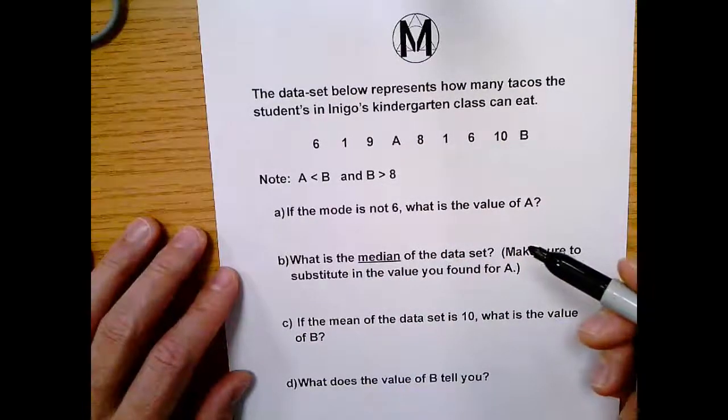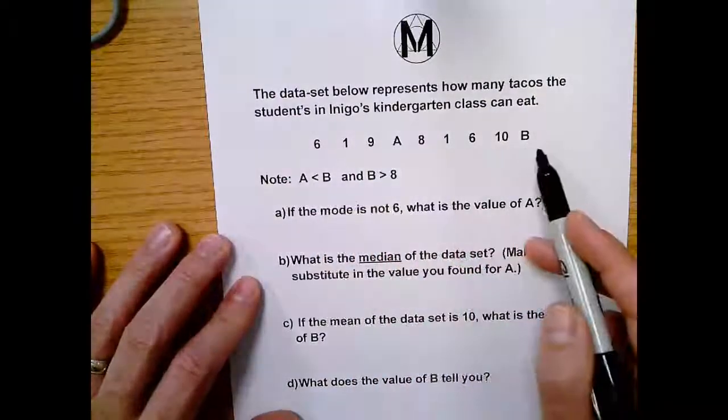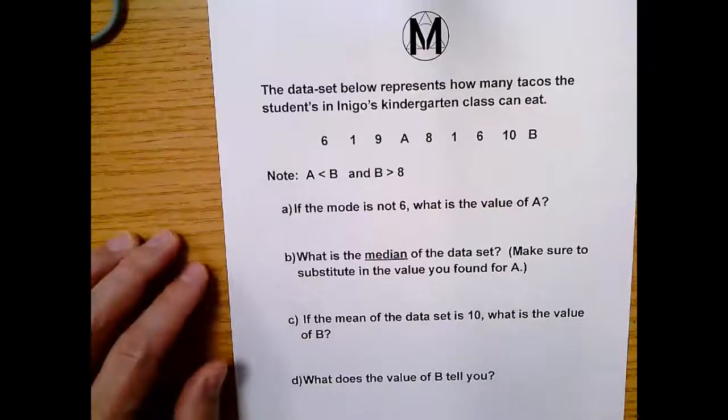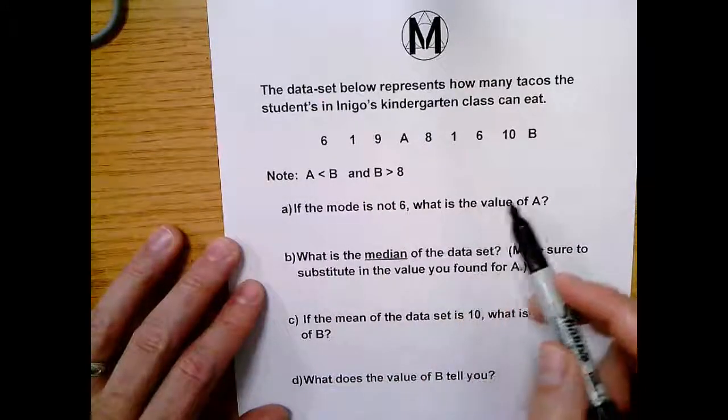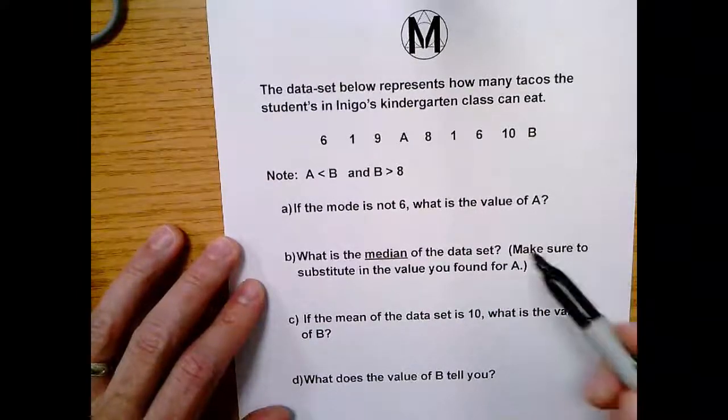Okie dokie. When we do these, in general, the first thing you want to do is rewrite these numbers all in order. It really will just benefit you for a couple of questions in general. So here we go. It says, if the mode is not six, what is the value of A? Okay, well, like I said, let's put them in order.